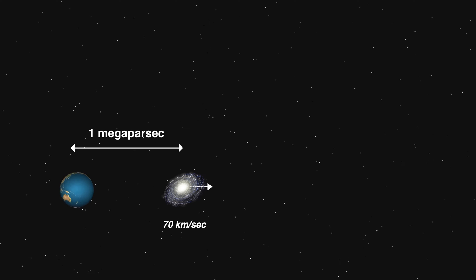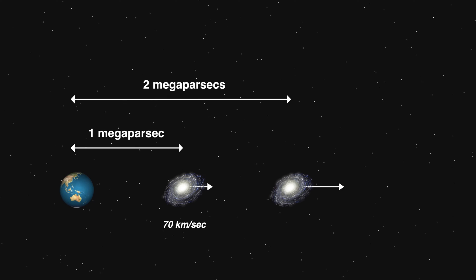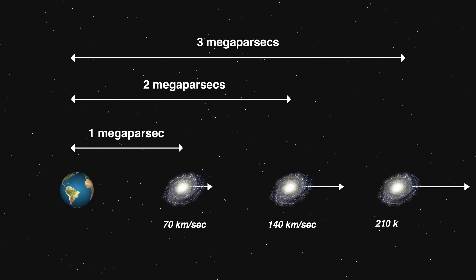If a galaxy a megaparsec away is moving away at 70 kilometers per second, a galaxy two megaparsecs away is moving away at 140 kilometers per second. Three megaparsecs means 210 kilometers per second, and so on.